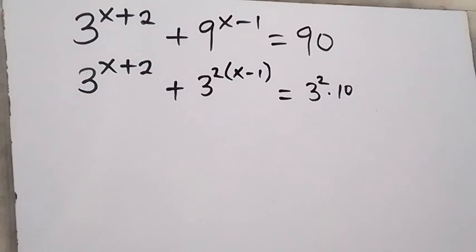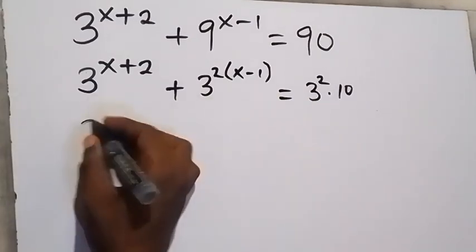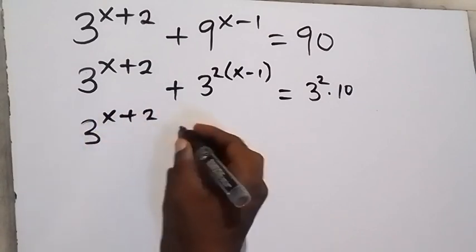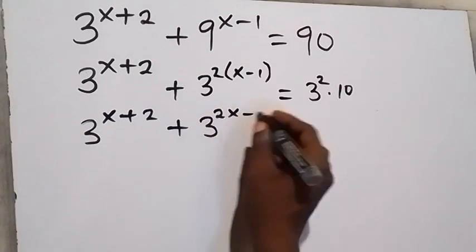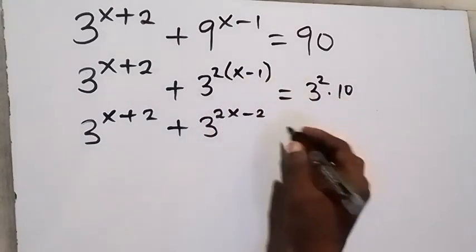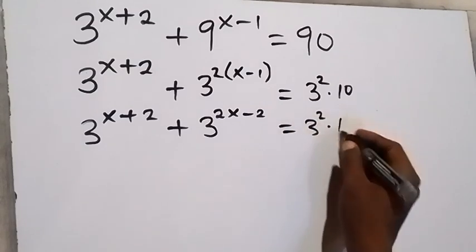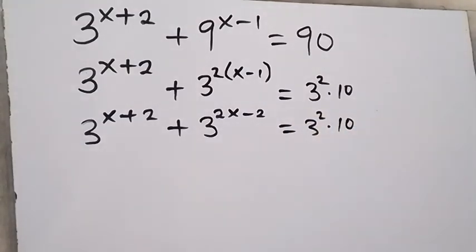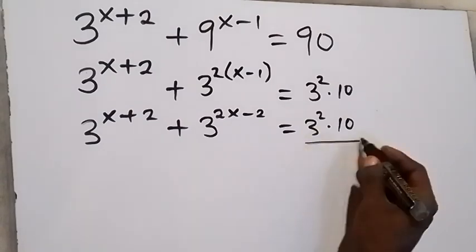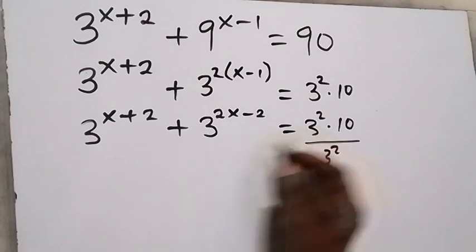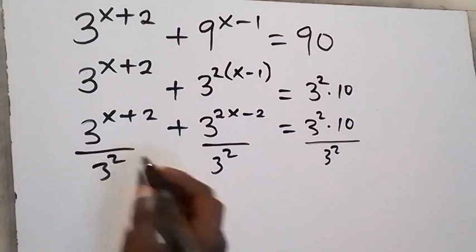We can write this again as 3 raised to power x plus 2, plus 3 raised to power 2x minus 2, opening the bracket, equals 3 raised to power 2 times 10. Now let's divide both sides by 3 raised to power 2 — dividing the left side and the right side by 3 raised to power 2.